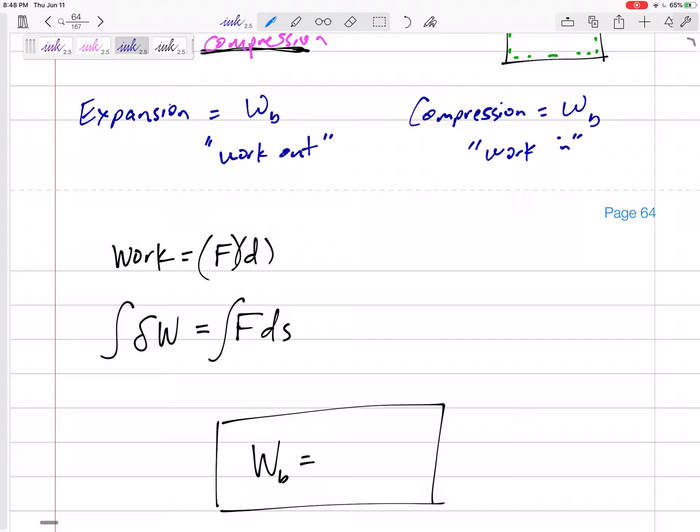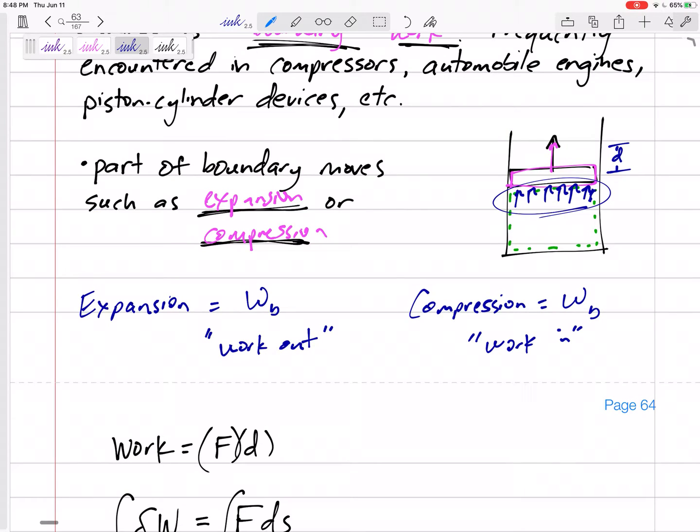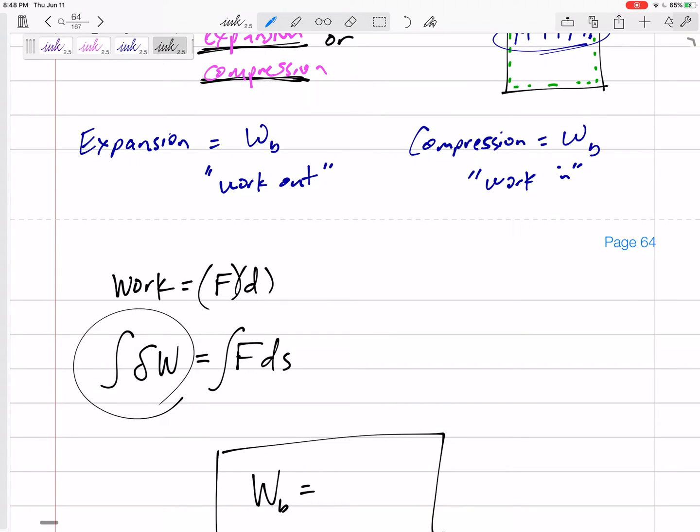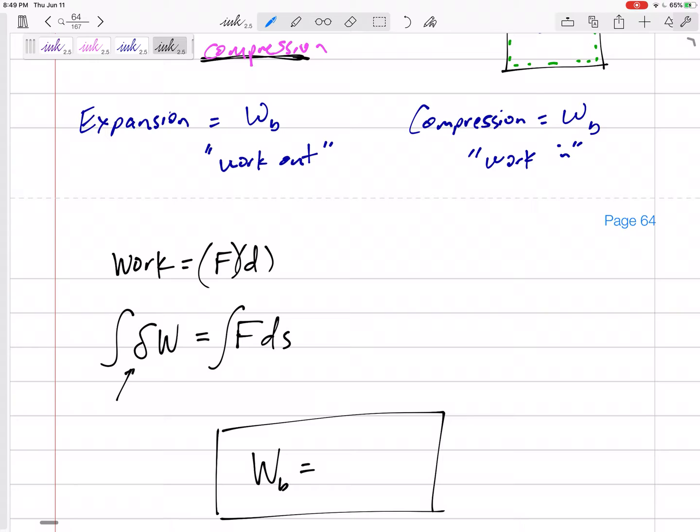Okay, my high school definition of work is force times distance. It's almost like we kind of have a force pushing on the boundary, and the boundary is going a certain distance. So let's kind of start here. So the work equals force times distance, but a better idea is like the integral of this δW. This lowercase delta just means it depends on the path. Depends on path. It's a path-dependent integral.